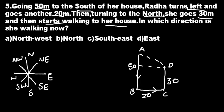This direction from D to A: the movement of Radha is from A to B, then B to C, then C to D, then D to A. Clearly, she is finally moving in the direction DA, that is north-west. So option A is correct.